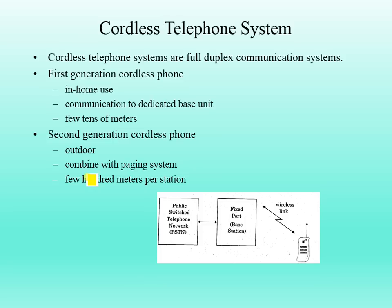Cordless telephone systems have two generations — one for home use and one for outdoor use. Cordless telephone systems are full duplex, meaning transmission and reception take place simultaneously. The first generation cordless phone communicates with a dedicated base unit only and cannot go anywhere else. The range of a cordless phone is only a few tens of meters — about 10 to 20 meters.